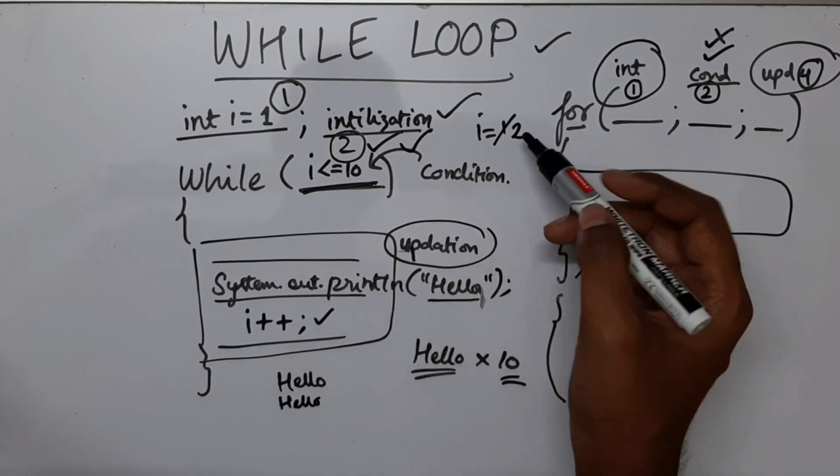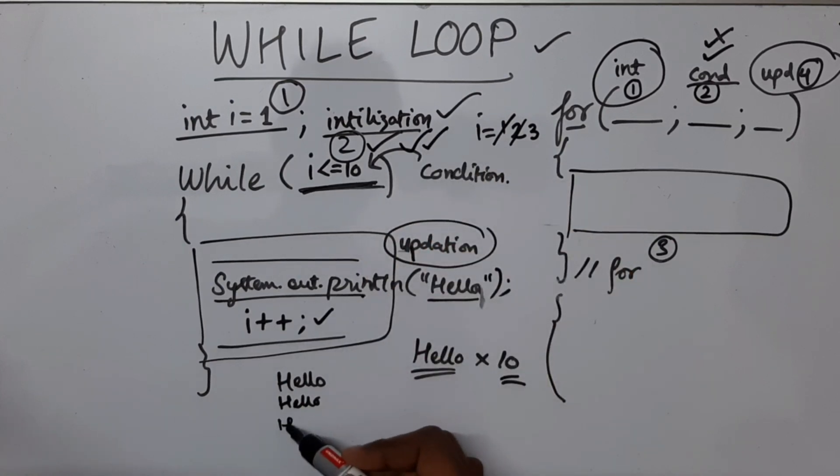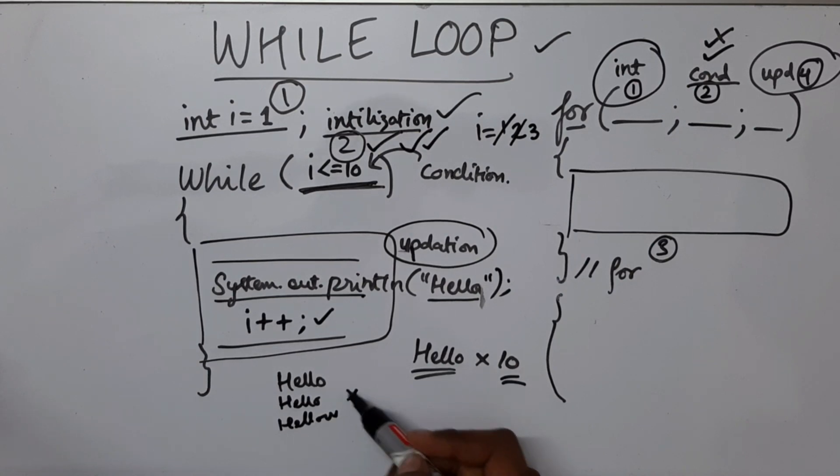Again it is going to update. This will become 3. It will check, it is true, it will print. Okay, this will keep on going for 10 times.